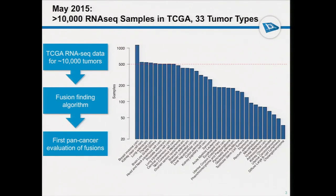RNA-seq data produced by the TCGA is a very powerful dataset to discover new kinase fusions and new fusions in general. To date, there are more than 10,000 samples that have been sequenced in TCGA across 33 tumor types.